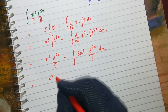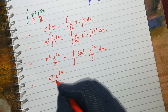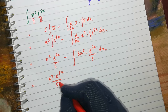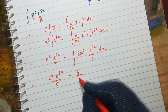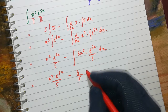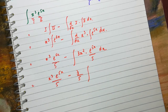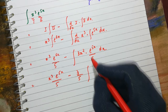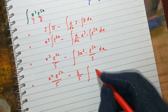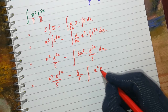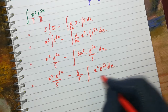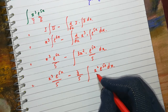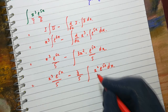This gives us x³ · e^(5x)/5, and I am separating the constants 3 and 5 to get minus (3/5) times the integral of x² · e^(5x) dx. Here I am going to apply integration by parts again.